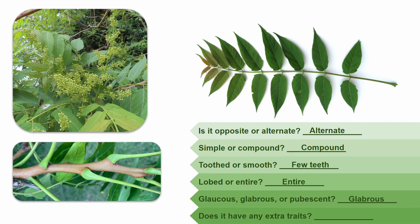Lastly, does this species have any extra traits? It does. The leaflets at the tip of the leaf are red, but also when it comes to compound leaves, the number of leaflets in a leaf is really useful in identifying species. This leaf has 18 leaflets, which is within the range of 11 to 41 leaflets that it is supposed to have. This massively slims down which trees our species could be. So what plant species is this? It is none other than Ailanthus altissima, otherwise known as the tree of heaven.